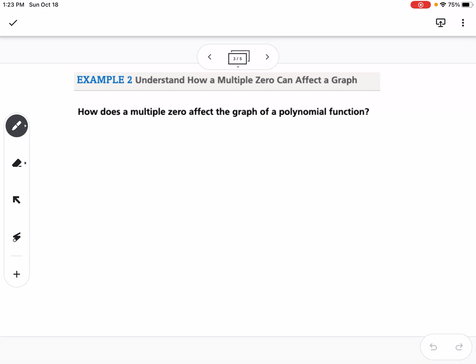Our next example is talking about multiple zeros. So this is called multiplicity. So it says, how does a multiple zero affect the graph of a polynomial? So multiplicity is when you have a factor that appears more than once. So for example, if I have x times x minus 3 squared, that means my zeros would be 0 and 3, and we can write m2 to show it has a multiplicity of 2.